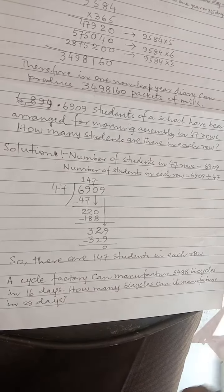Now we need to find how many bicycles can be manufactured in 29 days. Number of bicycles manufactured in 29 days will be 343 into 29. When we multiply 343 by 29, we get 9,947. Therefore, the cycle factory can manufacture 9,947 bicycles in 29 days.